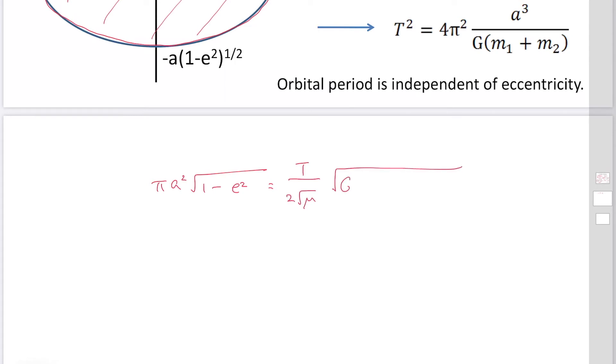And the √(1 - e²), on both sides it should be cancelled out.